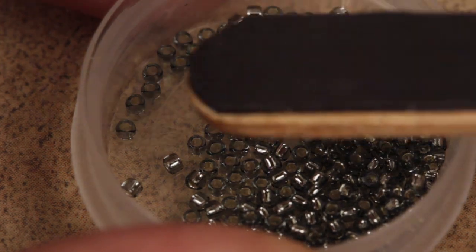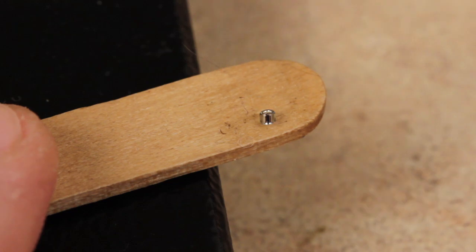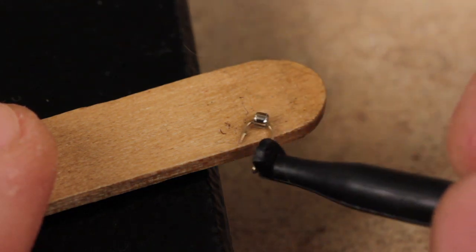A little dubbing wax on the end of a popsicle stick makes it easy to separate a single bead from the herd. It's also a very good way to hold the bead steady while you're threading it on the hook.